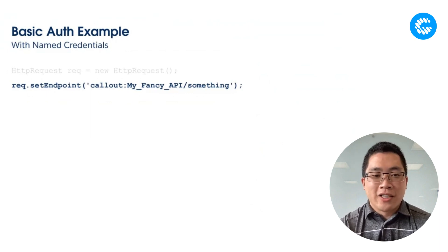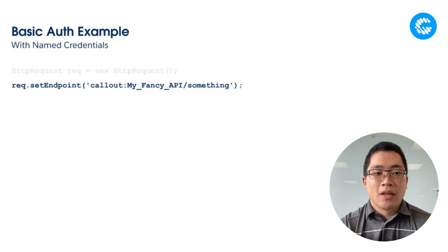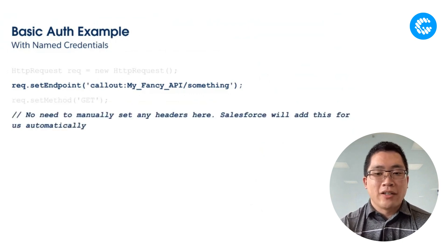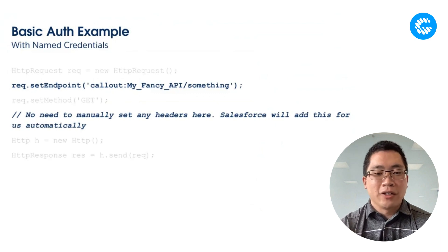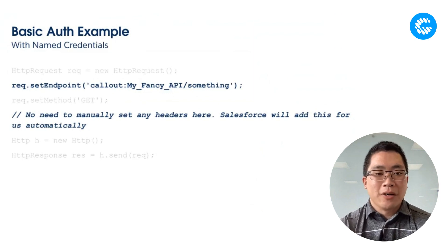What does this look like in our callout code? We start again with our HTTP request, but for the endpoint, instead of hardcoding the URL or grabbing it from a custom setting, we reference that named credential by its developer name — 'My_Fancy_API' — and can add additional URL suffixes and paths depending on what we're trying to do. We set the method and go straight ahead and send the request. There's no need to do anything with headers, usernames, or passwords — that's all done magically behind the scenes.